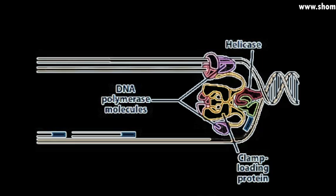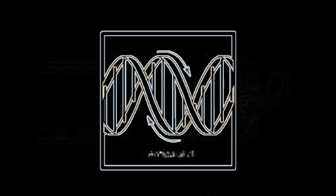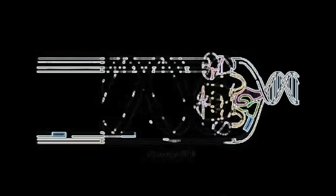These associations made by the clamp loading protein coordinate the simultaneous synthesis of both DNA strands at the fork. Note that the two strands of the double helix run in opposite directions. They are anti-parallel. While the leading strand can continuously synthesize in the direction of the replication fork movement,